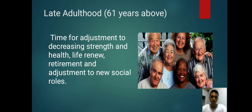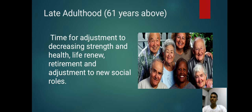Late adulthood, 61 years and above. This is the time for adjustment to decreasing strength, coping with retirement, and adjustment to new social roles. At this stage, they will devote more time to themselves. That was all about the stages of development; my partner will now continue to discuss the developmental tasks.